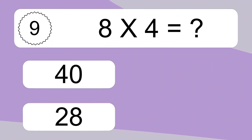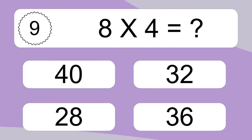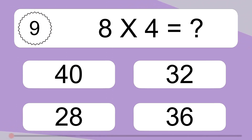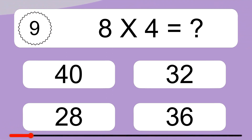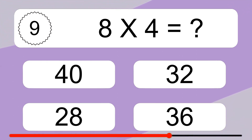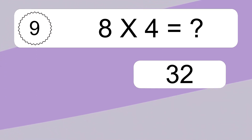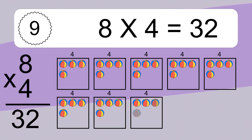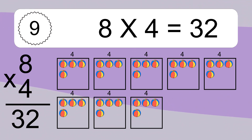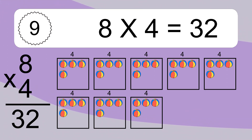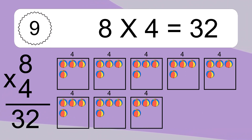8 times 4 equals what? 8 times 4 equals 32. We have 8 boxes, and each box has 4 colorful balls inside. If you count all the balls in all the boxes together, you will have 8 times 4 balls. This equals 32 balls.